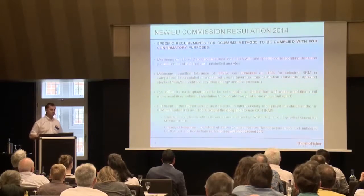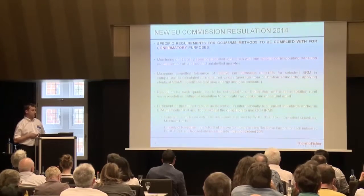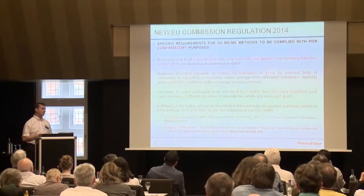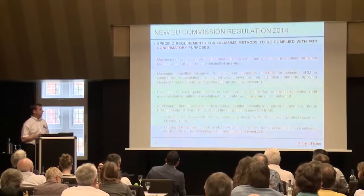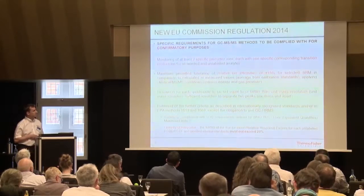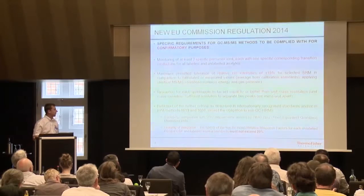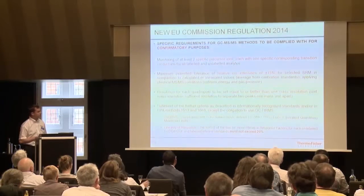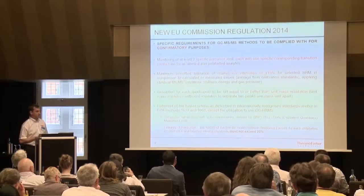It's probably a good idea to remind ourselves some of the new criteria that Alex was talking about yesterday for dioxin confirmation. So when we use GC-MS/MS, we need to look at additional confirmation points, and we also have to be careful with the way we select our transitions for every single compound. We need to monitor at least two specific precursor ions, each using a corresponding product ion — that's quite important for the confidence in the results. The maximum tolerance for the ion abundance should be within 15% for the selected SRMs, keeping the collision energy and gas pressure the same for each transition.